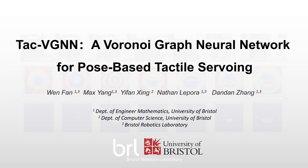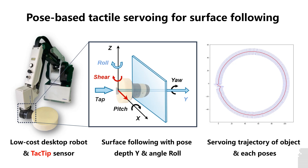This video introduces our research work about TAC-VGN, a Voronoi graph neural network for pose-based tactile servoing. Tactile perception is very necessary for robots to understand the surrounding environment they interact with. Tactile servoing controls the pose of the tactile sensor in physical contact with an object. We applied a tactile robotic system comprising a desktop robot arm and a tactile sensor, which we called the TAC-TIP, for a 2D surface servoing task.